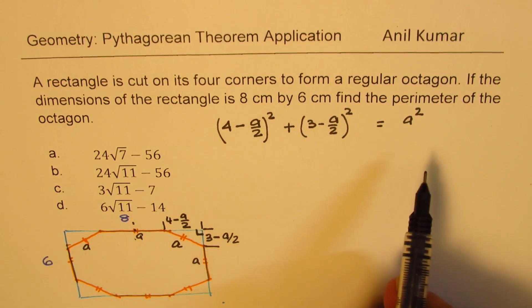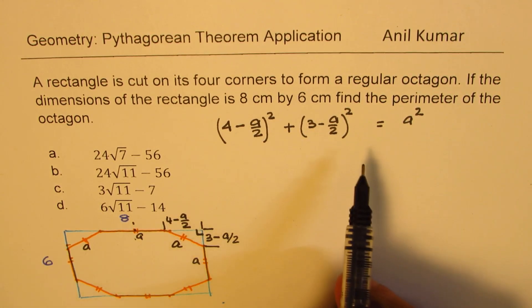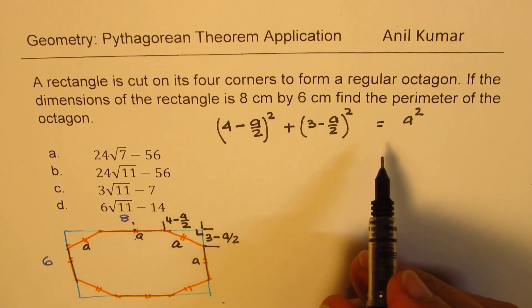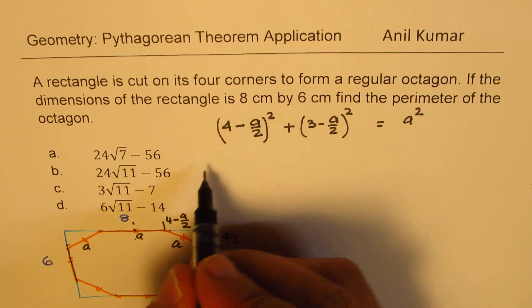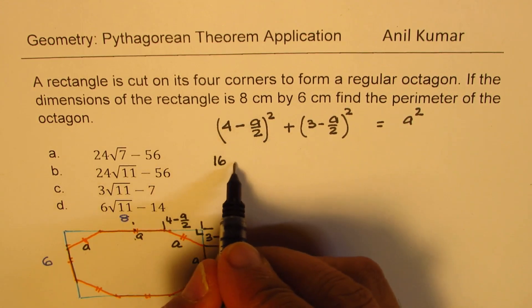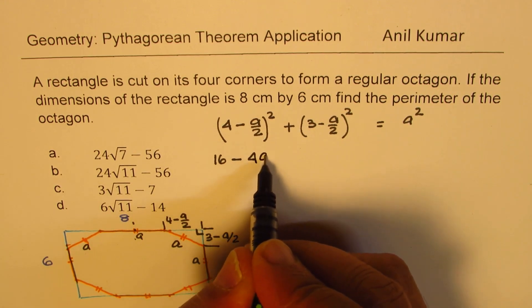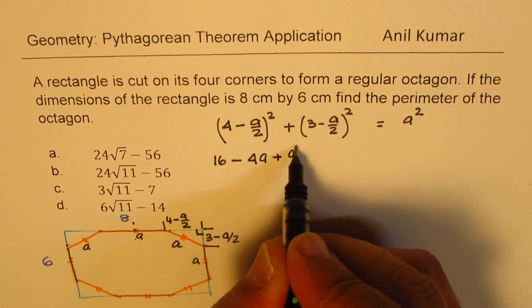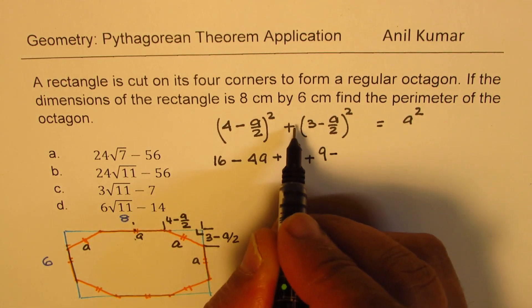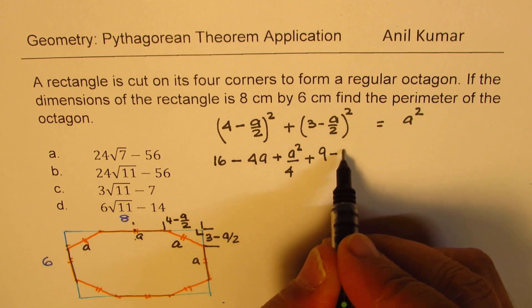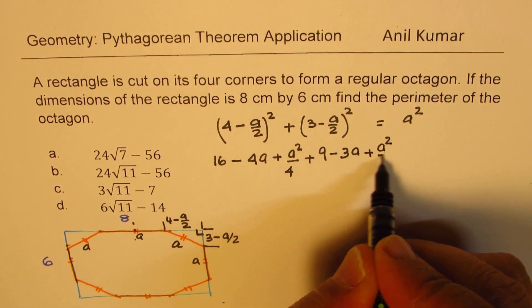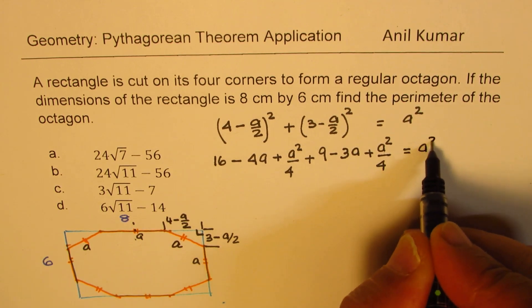There's only one variable and we can always solve for it. So we can actually pause the video, answer this question, and then check with my solution. So when you expand this, you get 16, that is A square minus 2AB, so minus 2 times AB gives you 4A plus A square by 4. The expansion of this will be 9 minus 2AB, so it gives you 3A plus A square by 4 equals A square.